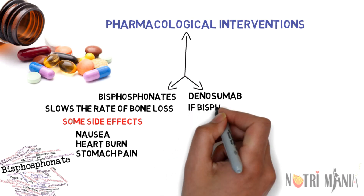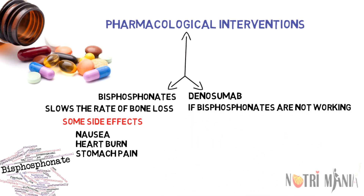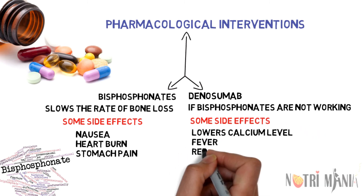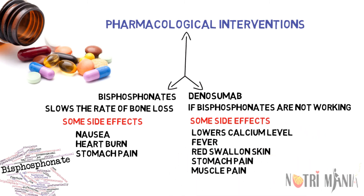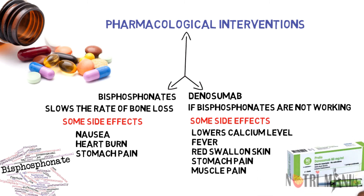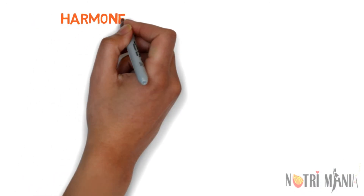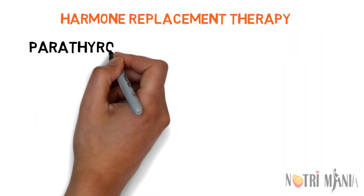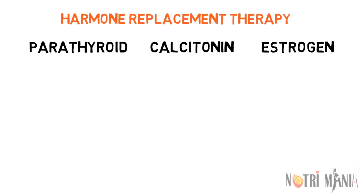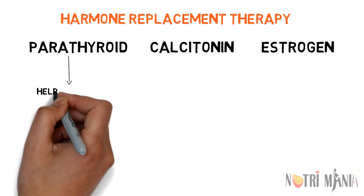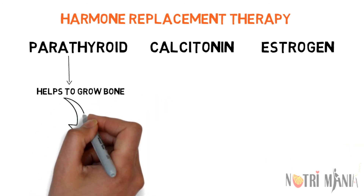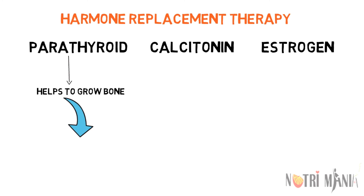Denosumab is also recommended for patients with osteoporosis. Some of its side effects are fever, red swollen skin, stomach pain, pain or burning when urinating, and muscle pain. Replacement therapy is also used for the treatment of osteoporosis, including parathyroid hormone, calcitonin, and estrogen, but all of these have specific considerations.